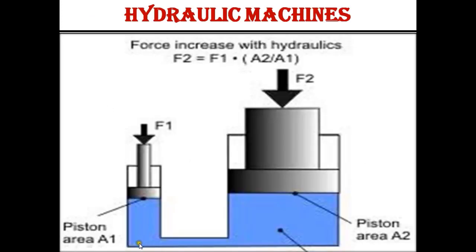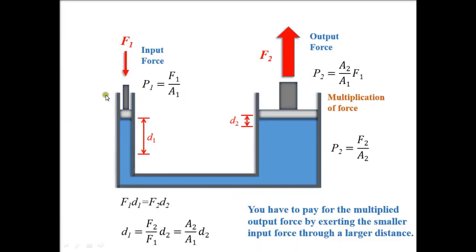Now look at the diagram which shows the smaller piston and the larger piston. In another diagram, we can see the input force and the output force. The distance d1 corresponds to force f1, and the distance d2 corresponds to force f2. From this, force over area is equal for both pistons, allowing us to find the input and output forces.